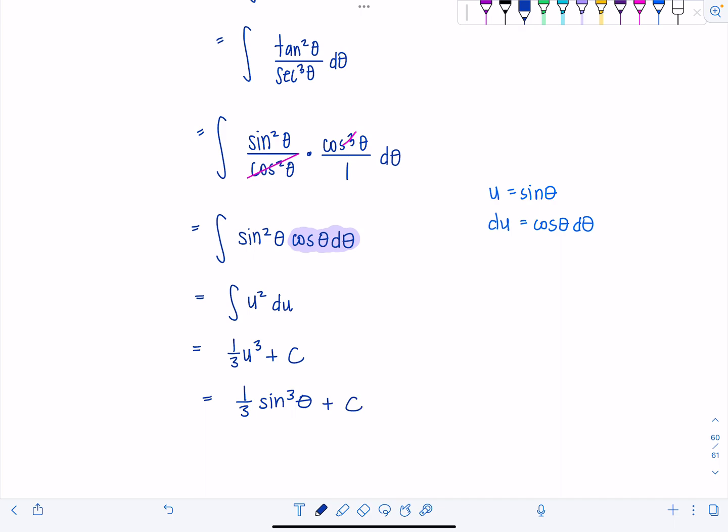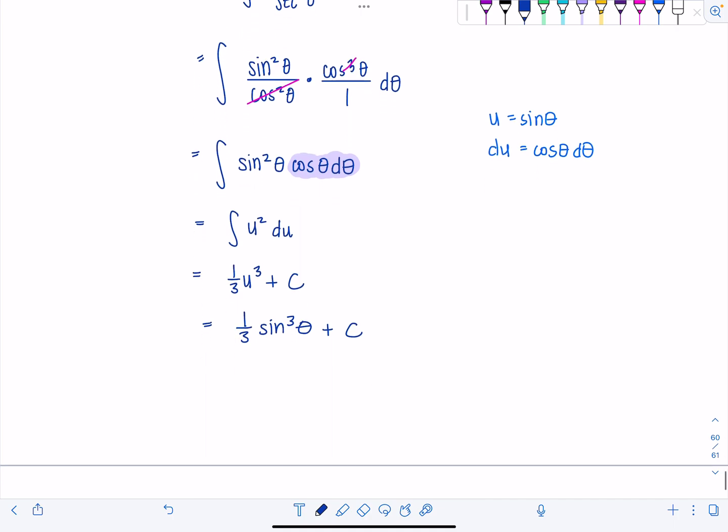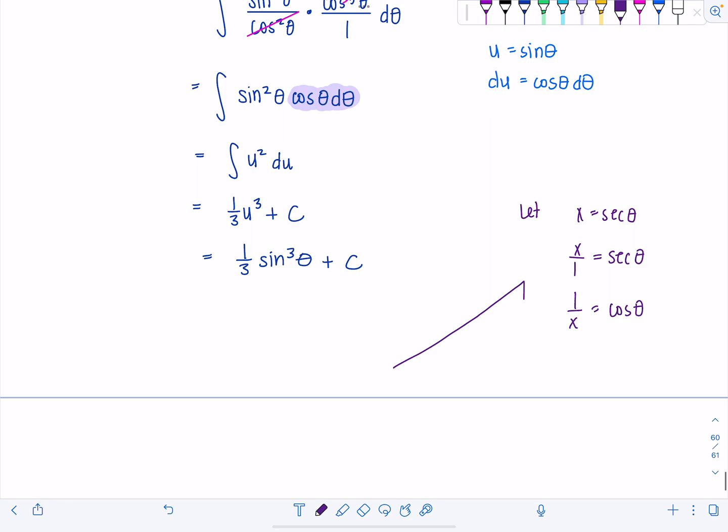And then we're not done. So remember, the original integral was not in terms of theta, it was in terms of x. And when we did our trig sub, we let x equal secant theta, right? That's x over one is secant theta. That's the same as saying one over x is cosine theta. I can draw a little triangle now, a theta triangle.